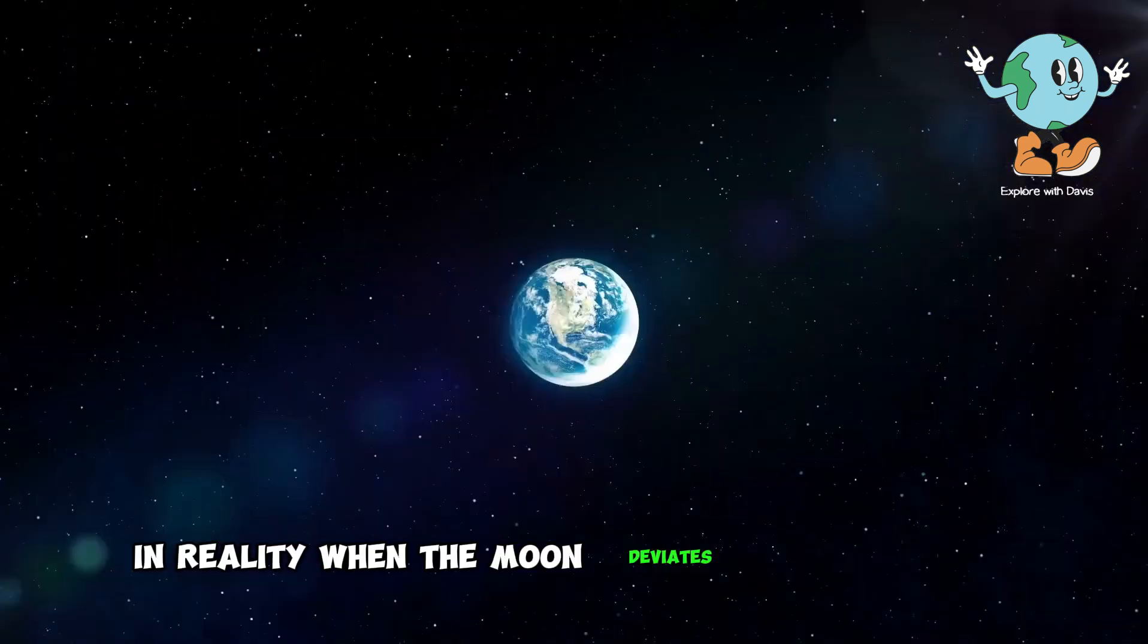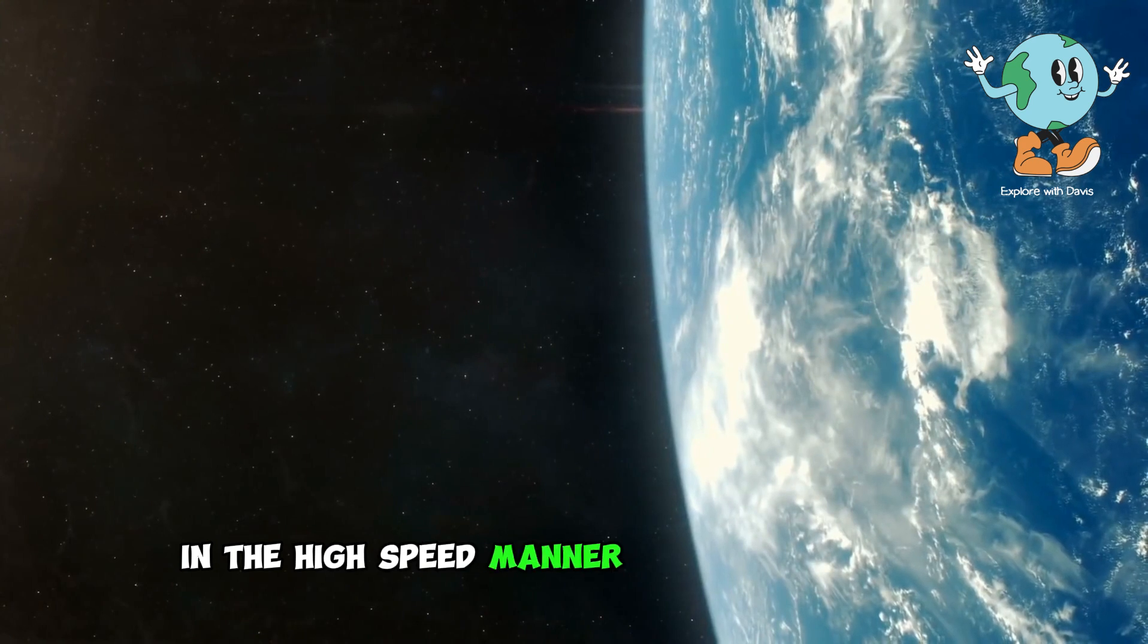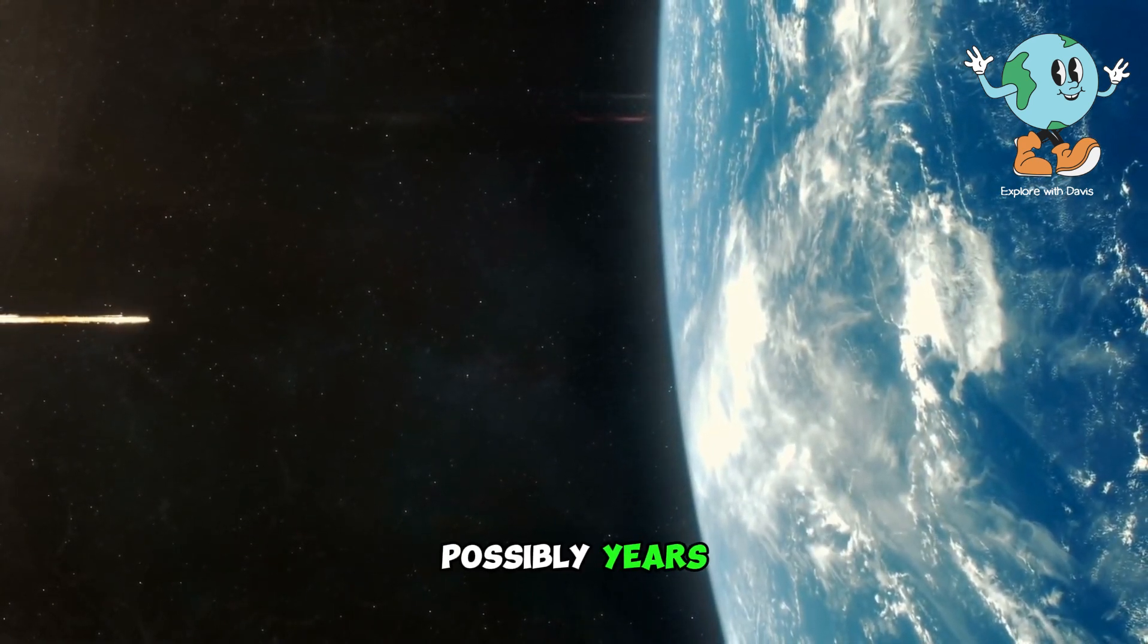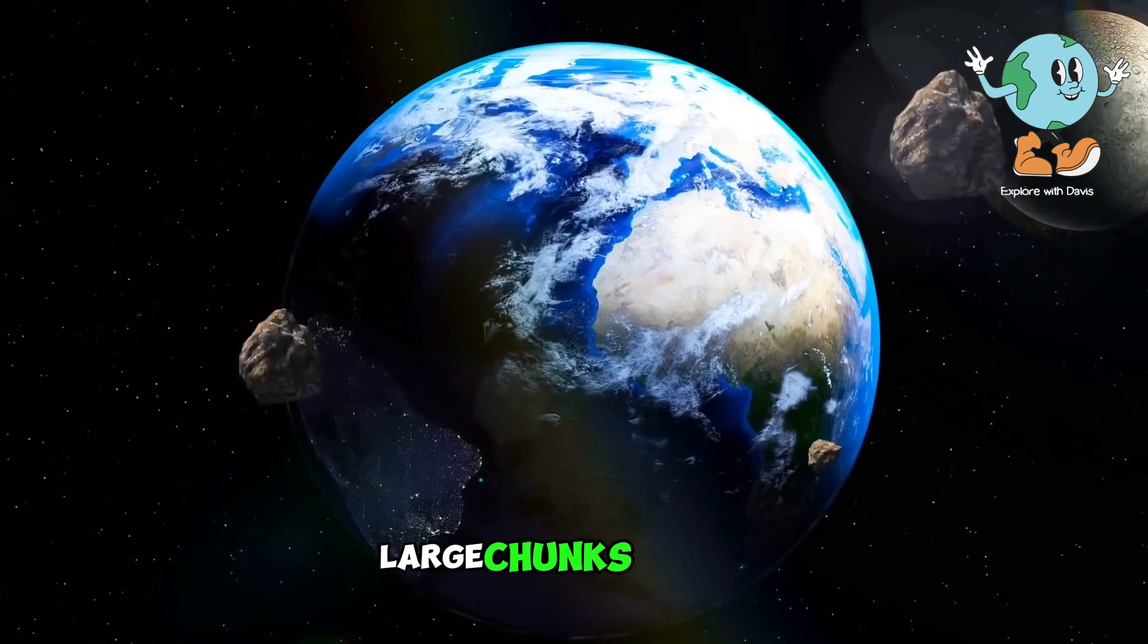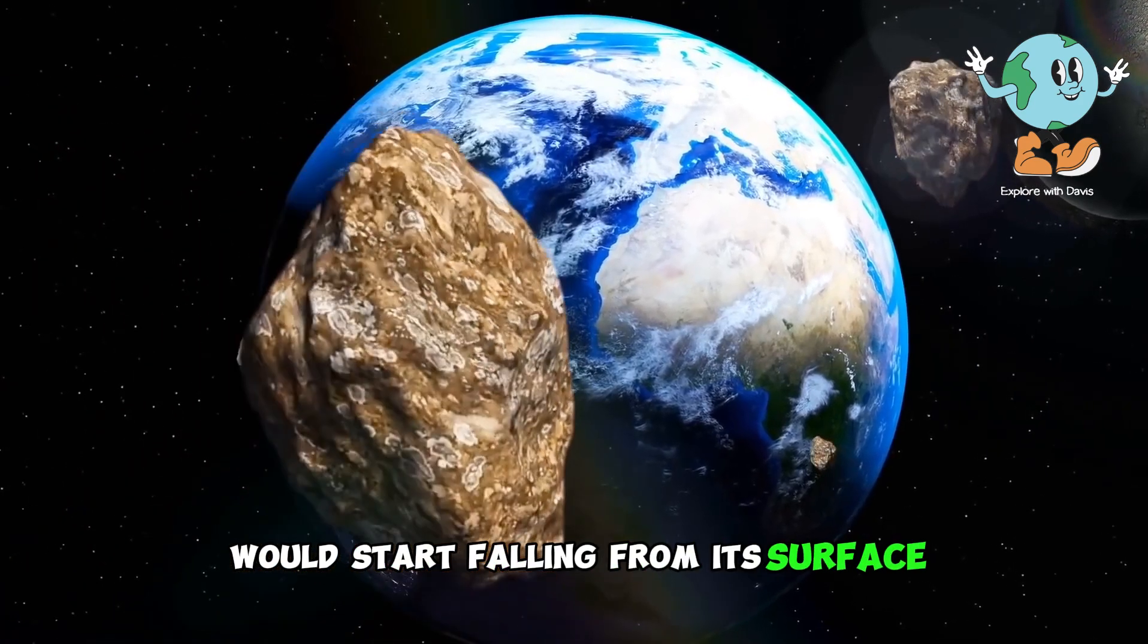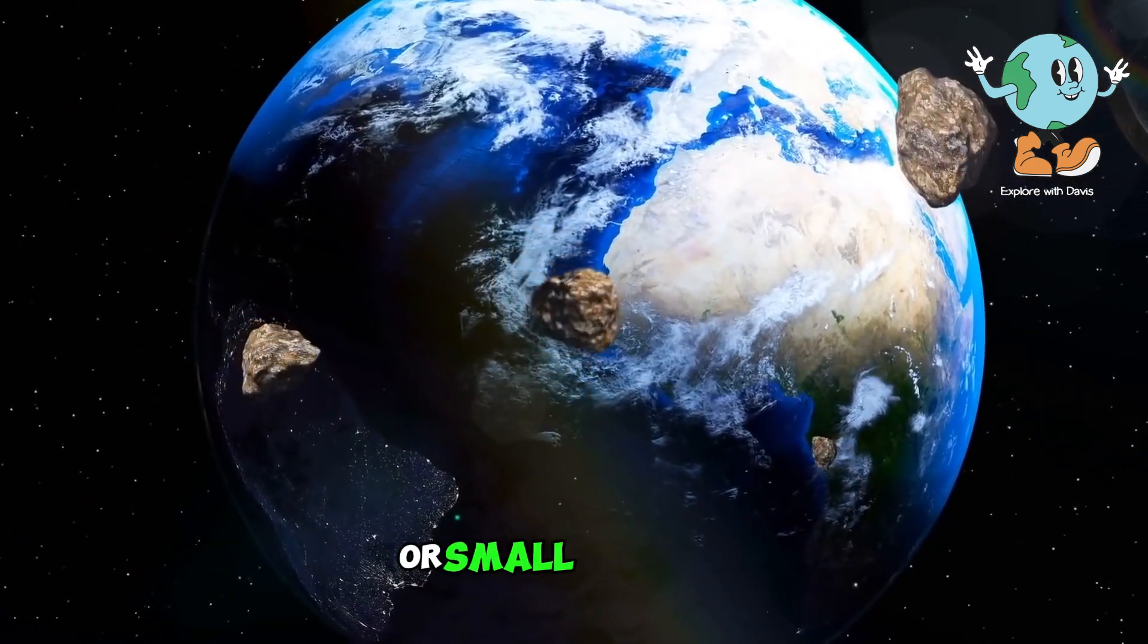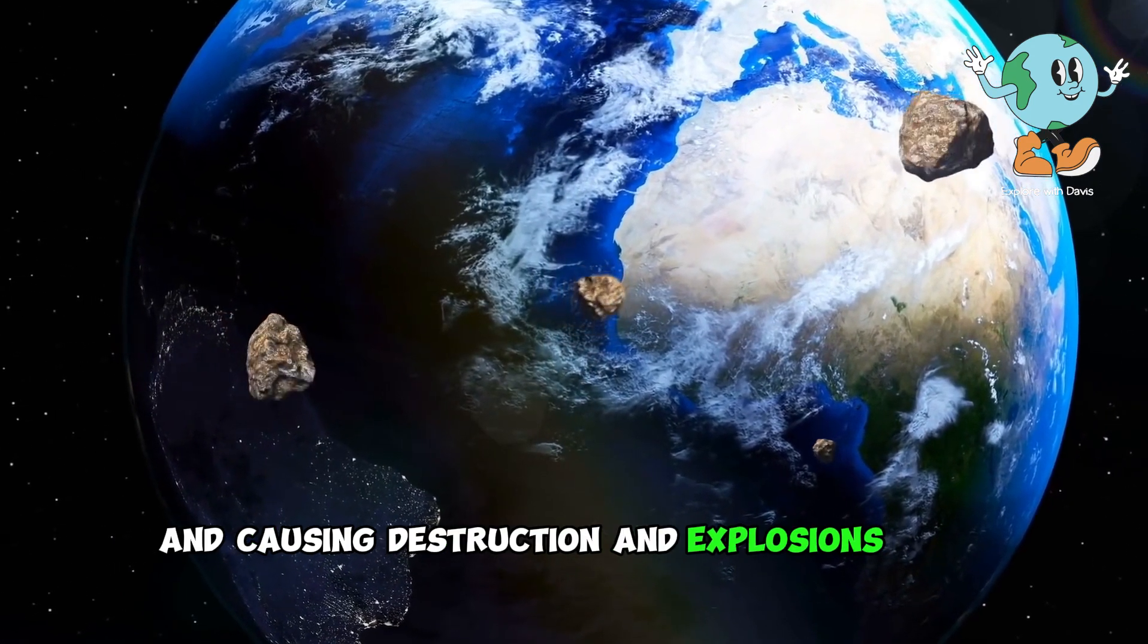In reality, when the moon deviates from its orbit, it won't immediately reach Earth in the high-speed manner some might expect. It would take a considerable amount of time, possibly years, for it to reach Earth's surface. Initially, as the moon approaches Earth closely, large chunks of rock would start falling from its surface and heading towards Earth. These rocky fragments would act as meteors or small asteroids, directly impacting and causing destruction and explosions upon collision.